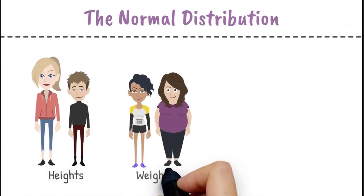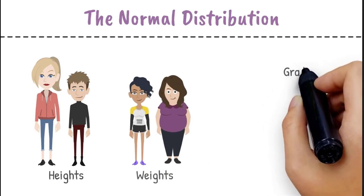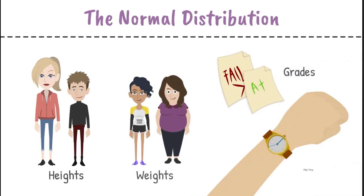The normal distribution represents many things, from explaining heights and weights of a group of students, grades on a standardized test, and even the time it takes to run a mile.